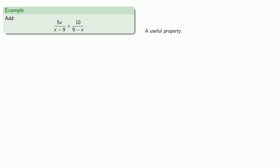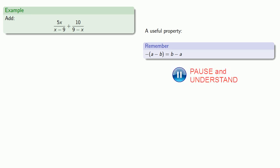But here's a useful property to remember. Minus the quantity a minus b is the same as b minus a. And what that means is that I can reverse the order of a subtraction by multiplying by negative 1.